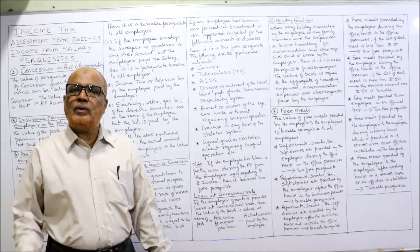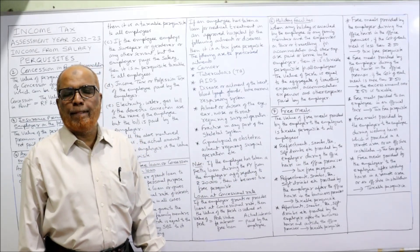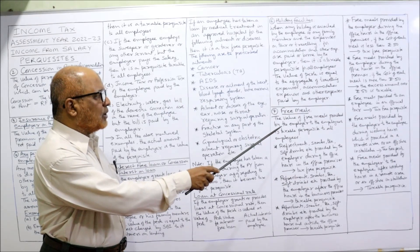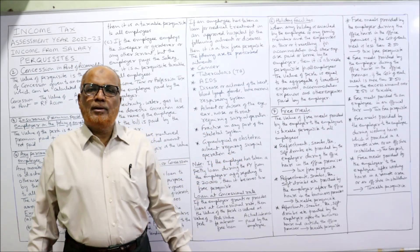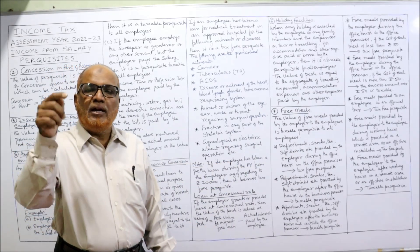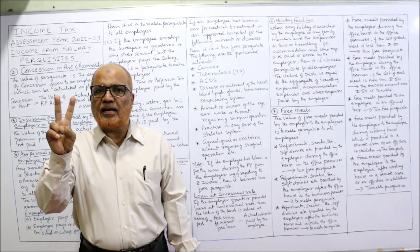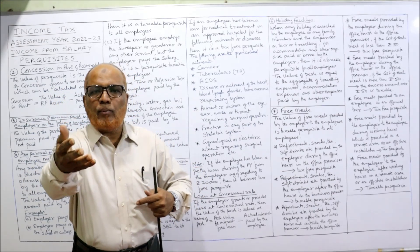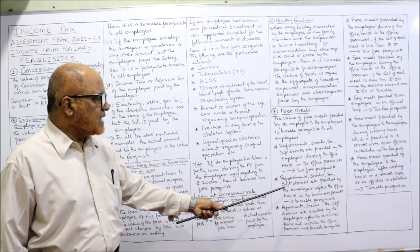The seventh point is free meals. Free meals given by the employer to the employee are a taxable perquisite. However, there are different situations. Refreshments — snacks, tea, or soft drinks — provided by the employer to the employee during business hours and within the business premises is a tax-free perquisite. Two conditions are attached: it must be during business hours and within the business premises.